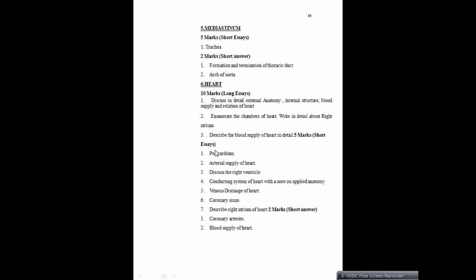Five markers: pericardium — need to mention about the layers of pericardium and sinuses of pericardium. Arterial supply of heart specifically asked — need to mention right and left coronary artery and cardiac dominance. Discuss the right ventricle — explain only the right ventricle: external features, internal features, which surfaces it is forming, which border it is forming, and the blood vessels supplying this area. Conducting system of heart with a note on applied anatomy — mention all the conducting system: SA node, AV node, Purkinje fibers, and so on, with applied aspects. Arrhythmia is an applied aspect of it.